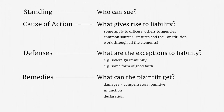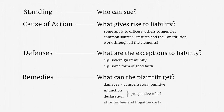Declaratory relief is another remedy you will encounter — that's a judicial statement of legal rights. Since a declaratory judgment against a surveillance practice does not have any force of its own, it is usually paired with an injunction that prohibits the practice. Together, injunctive and declaratory relief are often called prospective relief, the idea being that they are forward-looking remedies. Some causes of action also entitle a prevailing plaintiff to attorney fees and litigation costs. Since lawyers can be exorbitantly expensive, fee shifting often plays a substantial role in litigation decisions.